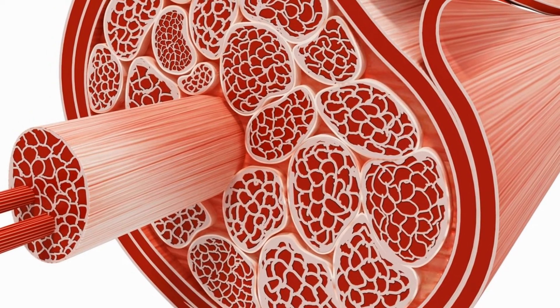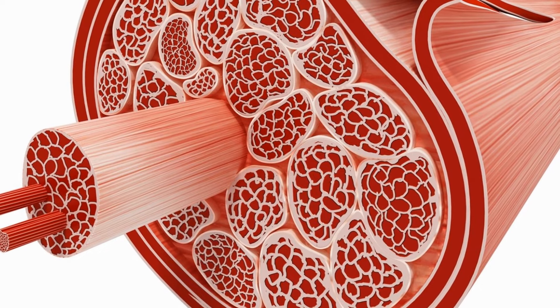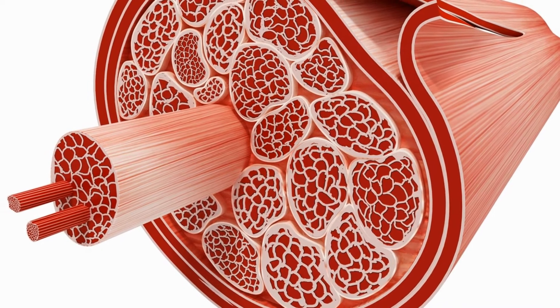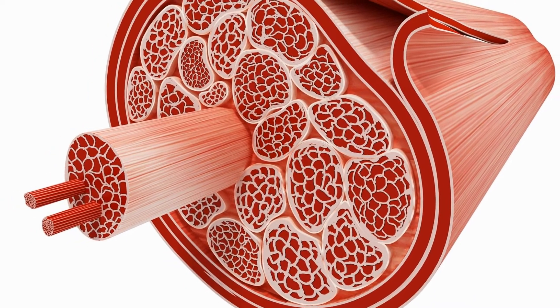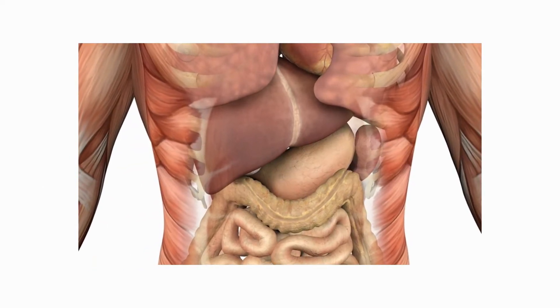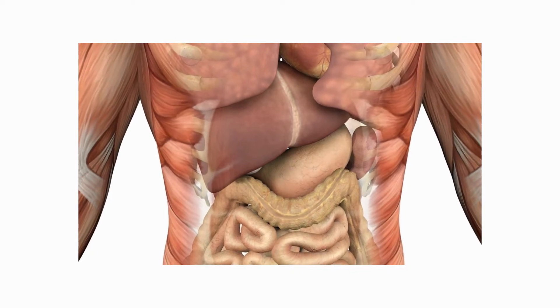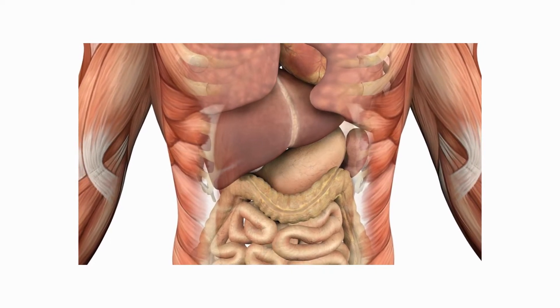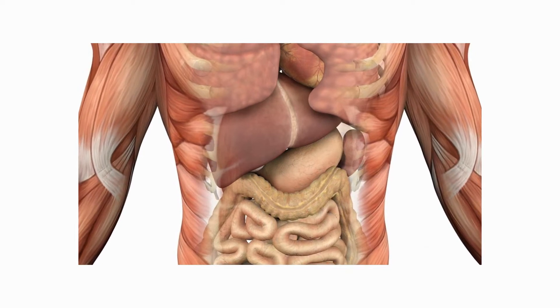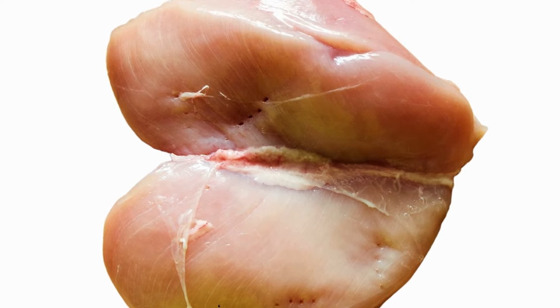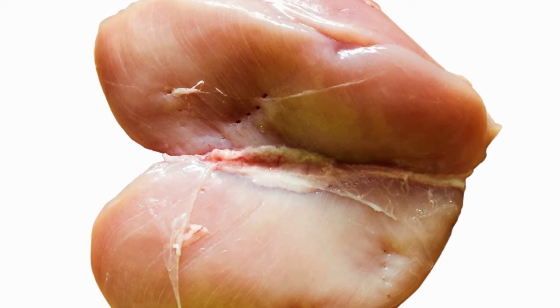Fascia is a highly organised mesh formulation comprising of cells, collagen and elastin fibres, and a gel-like fluid called ground substance. Its job is to attach, stabilise, and close and separate muscles and internal organs. We can think of fascia as the most sensitive, highly interconnected system in the entire body. If you imagine a piece of meat like a chicken breast, you can often see a white tissue web interweaved around and throughout the meat.